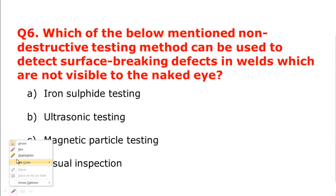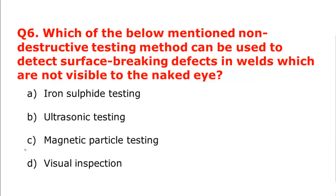Question number six: which non-destructive testing method can detect surface-breaking defects in welds not visible to the naked eye? The primary test is dye penetrant, but since it wasn't listed as an option, the most appropriate answer here is magnetic particle testing. With magnetic particle testing you can detect both surface defects and subsurface defects.